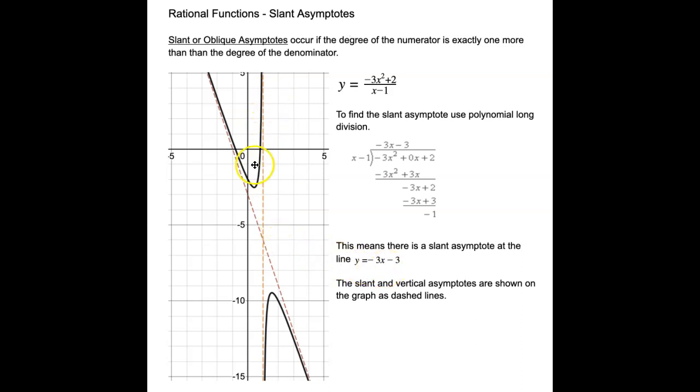And the function is graphed here. It's the black lines. This red dashed line is your slant asymptote. And this dashed yellow line is your vertical asymptote that you can see you cannot have 1 in for this function or you'd be dividing by 0. So these are the asymptotes that define this function.